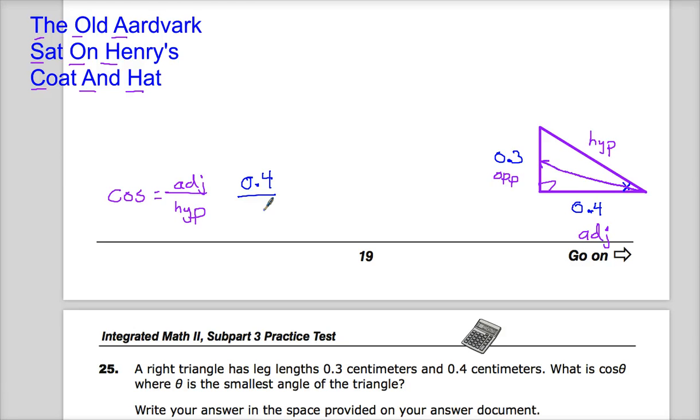There's a couple ways that you could do it. If you don't know what the Pythagorean—this is a Pythagorean triple. If you know what the Pythagorean triples are, a common Pythagorean triple is a 3, 4, 5. And since it's 0.3, it's a 0.4, that would make the hypotenuse 0.5. So that can get you down to 0.8. And that's what they want.